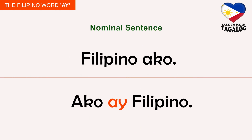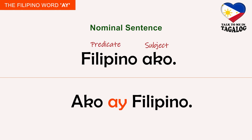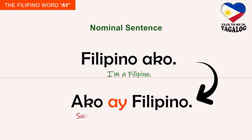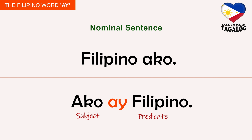Let's first study nominal sentences. A nominal sentence consists of a noun in the predicate position. 'Filipino ako' — the noun 'Filipino' is the predicate and 'ako', meaning 'I', is the subject. 'Filipino ako' means 'I'm a Filipino'. To invert the word order to subject plus predicate, our sentence will be 'Ako ay Filipino', which means the same: I'm a Filipino.